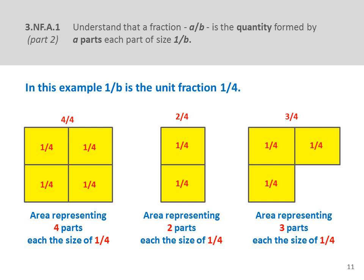Because children already have their area models, they can place 1, 2, 3, or 4 of the 4 equal parts over the whole to visualize and compare 1 fourth, 2 fourths, 3 fourths, and 4 fourths. For students advancing quickly, there are many concepts the area models will demonstrate. For example, some students will recognize that 2 fourths of their congruent rectangles are equal to 1 half, or that 2 halves and 4 fourths both equal the whole.